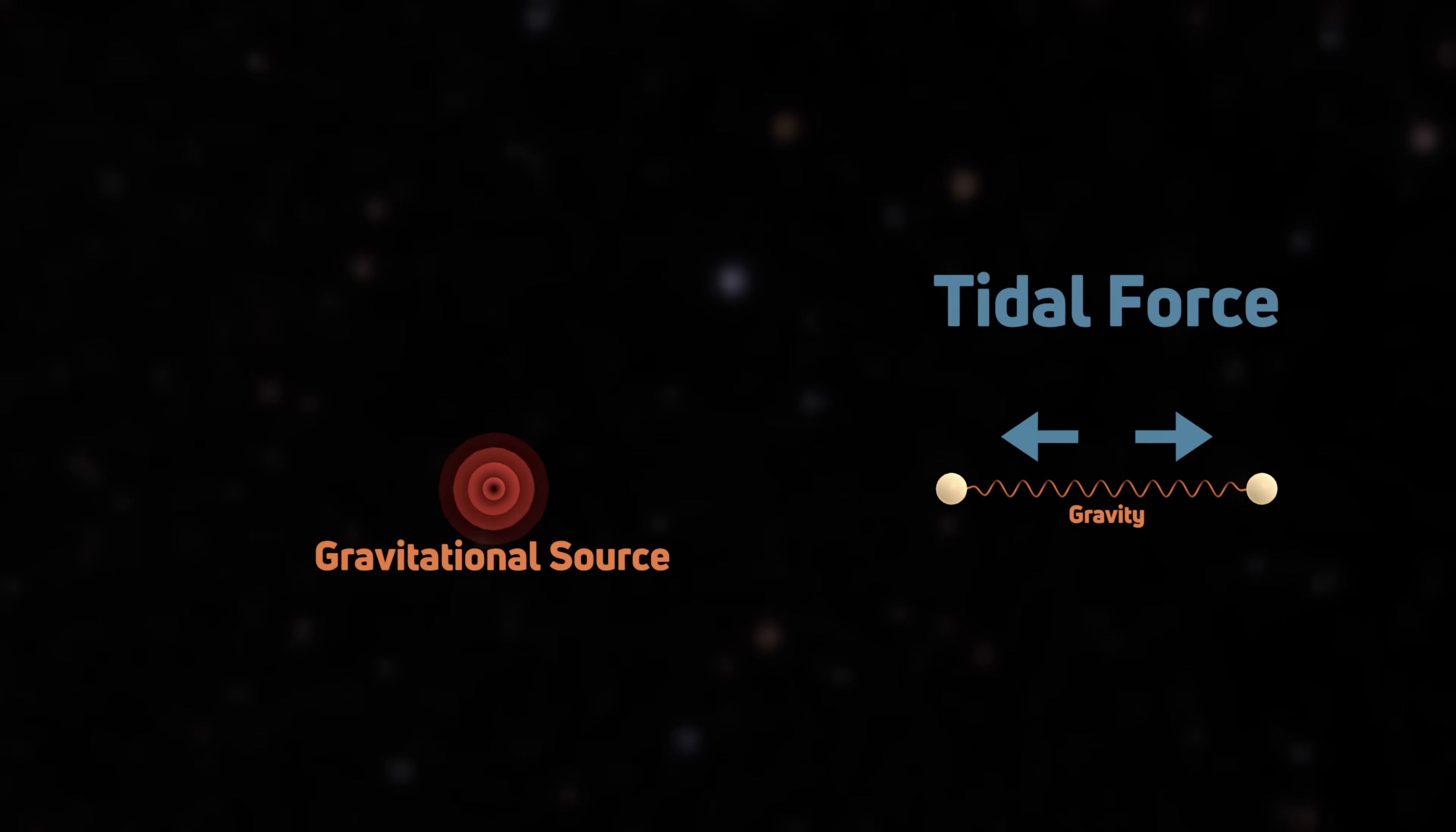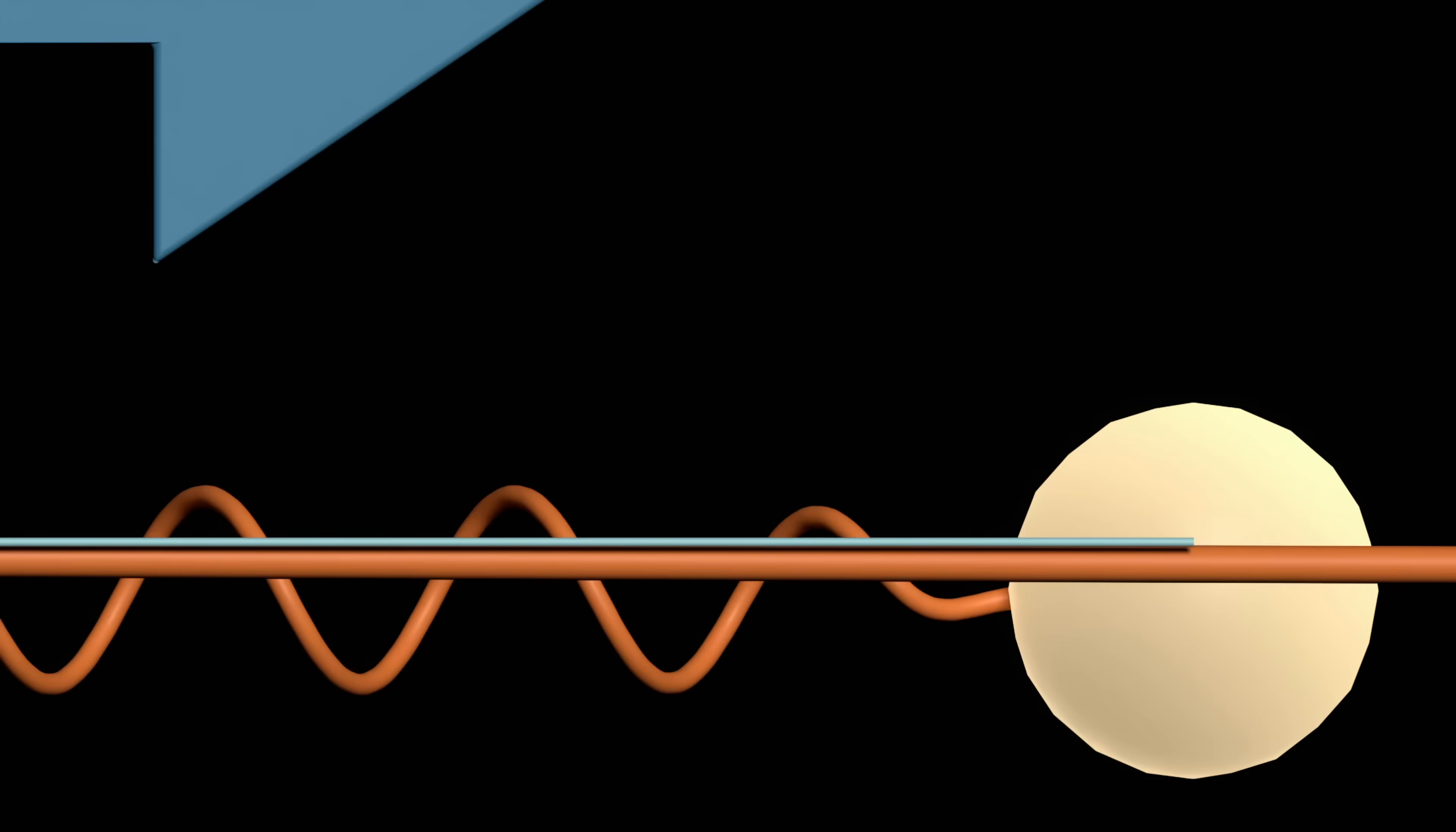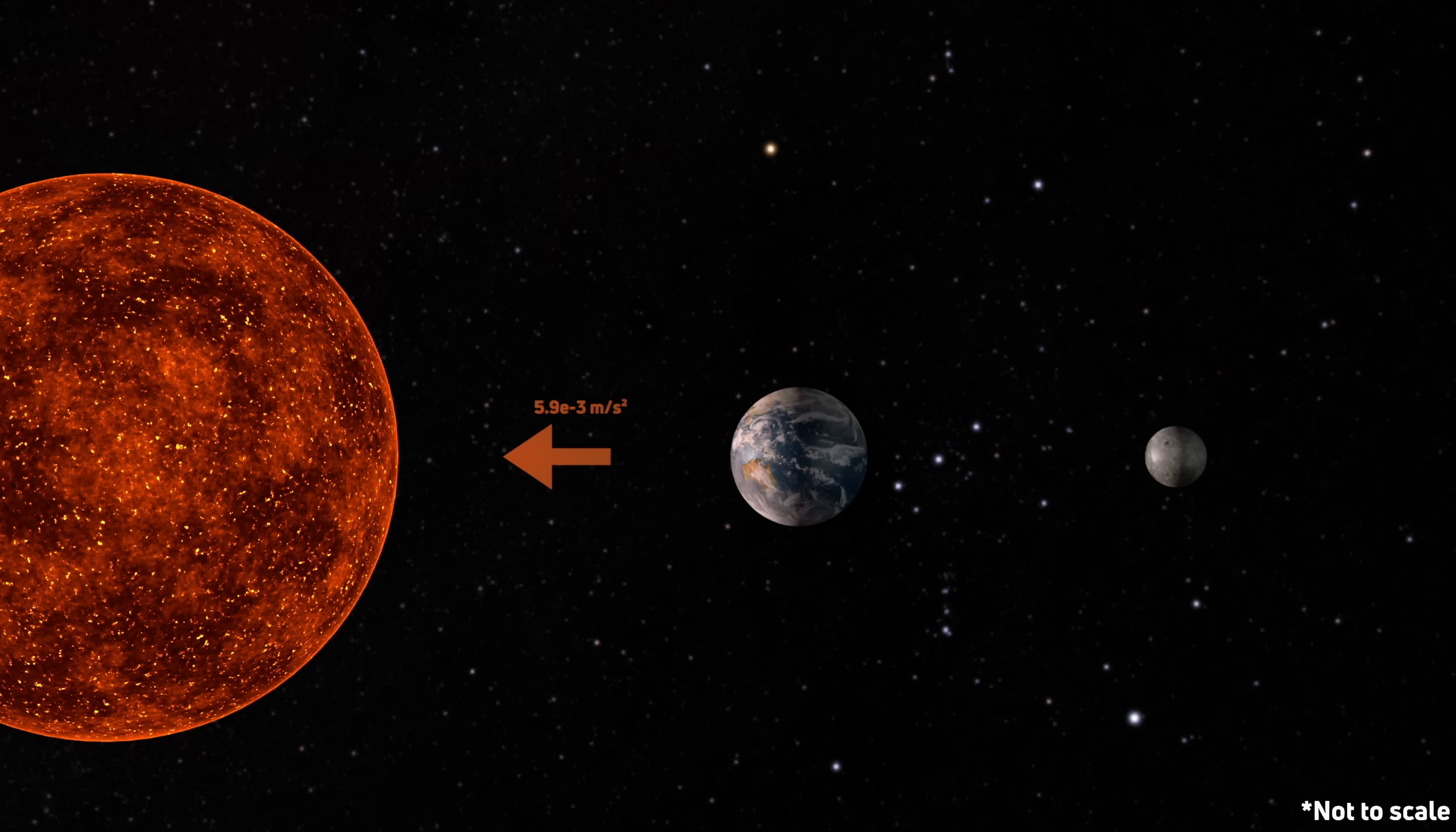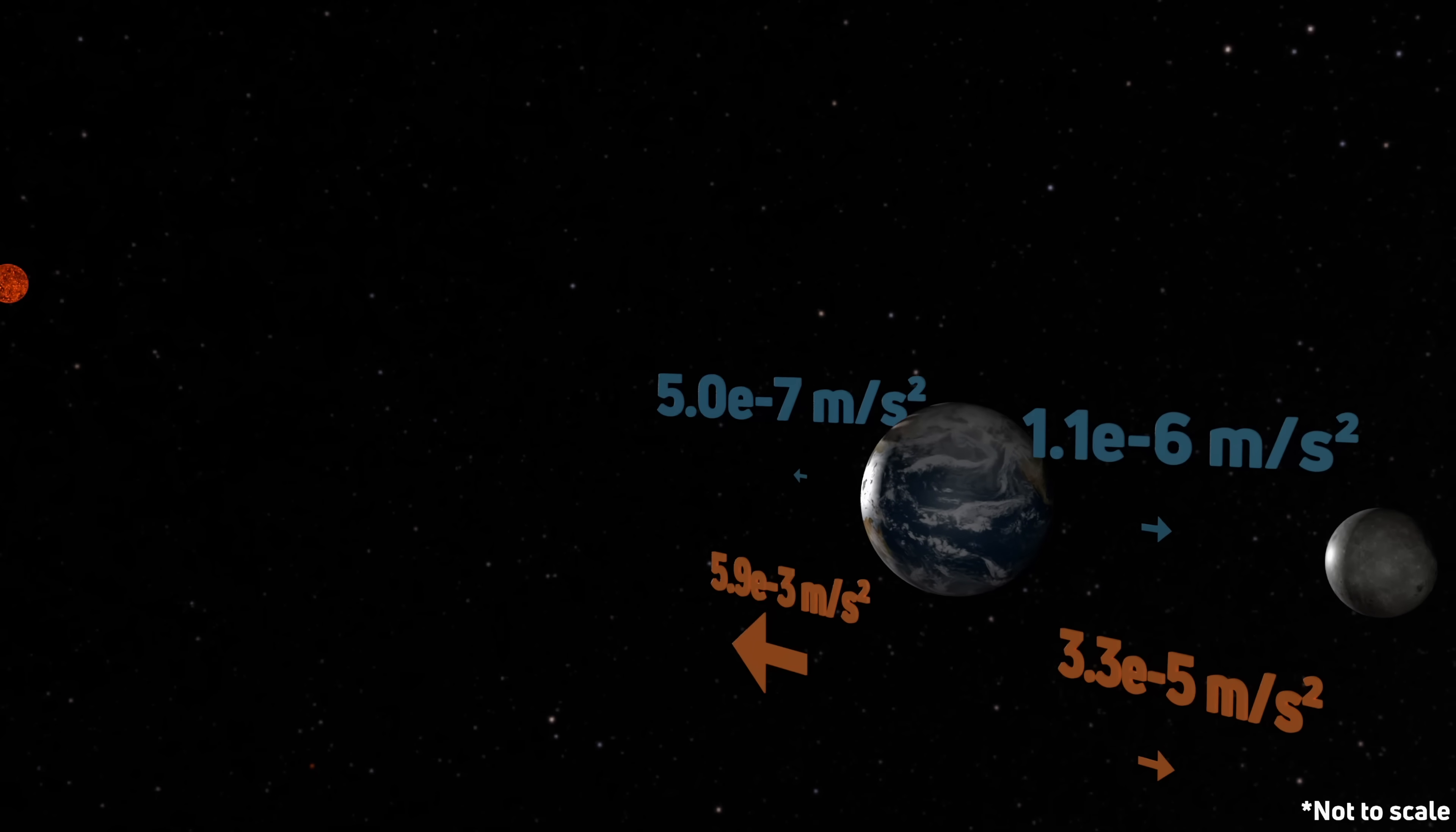the point closer to that source will feel a slightly stronger attraction than the point that's further away. However, because gravitational strength decays so rapidly, when you are far away, this difference in strength is pretty weak. Although we feel a stronger pull of gravity from the sun compared to the moon, because the moon is so much closer, it produces a stronger tidal force.